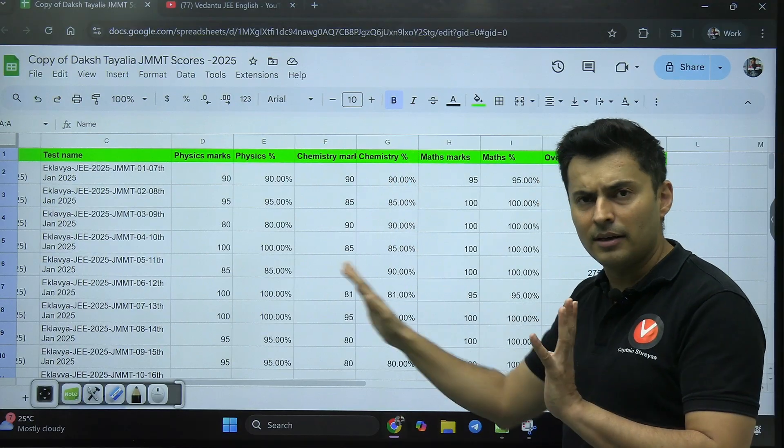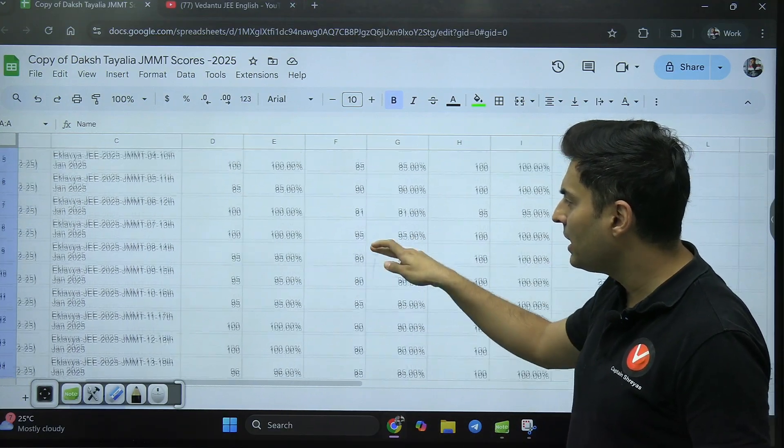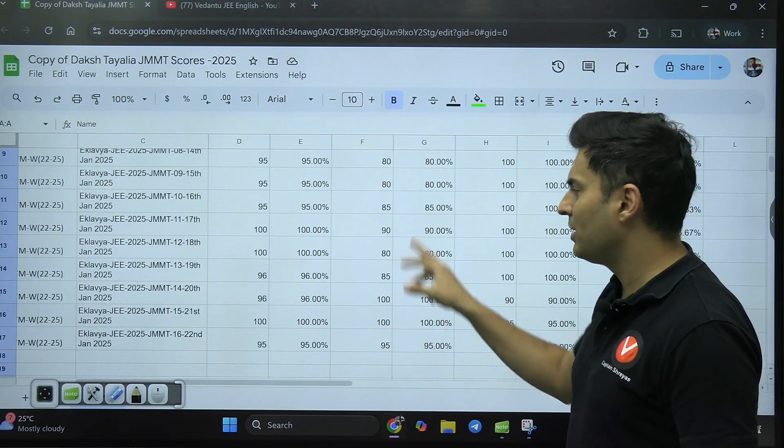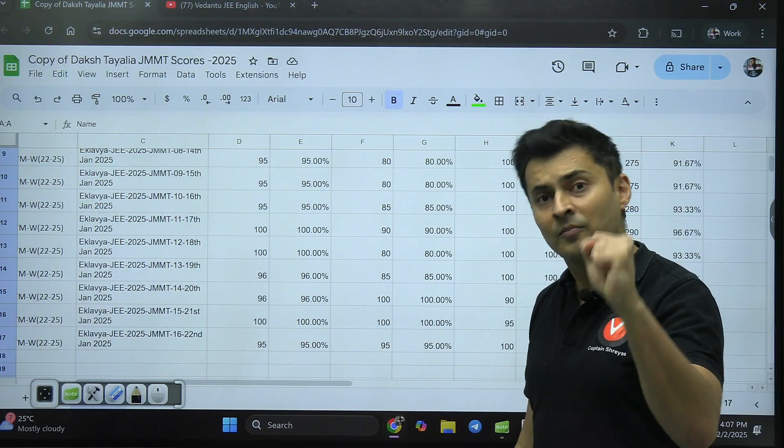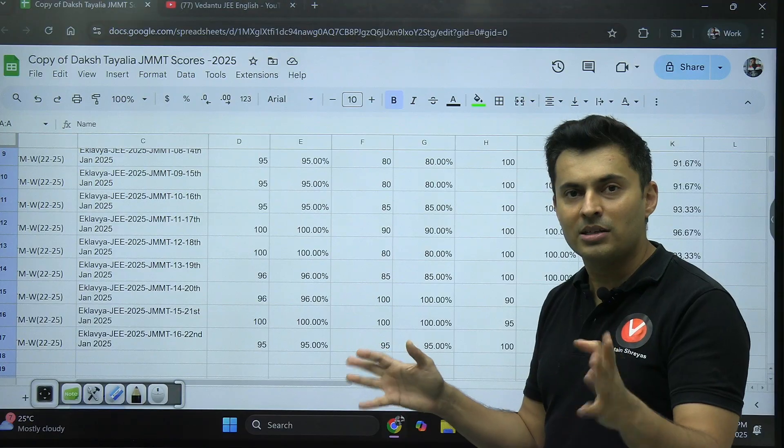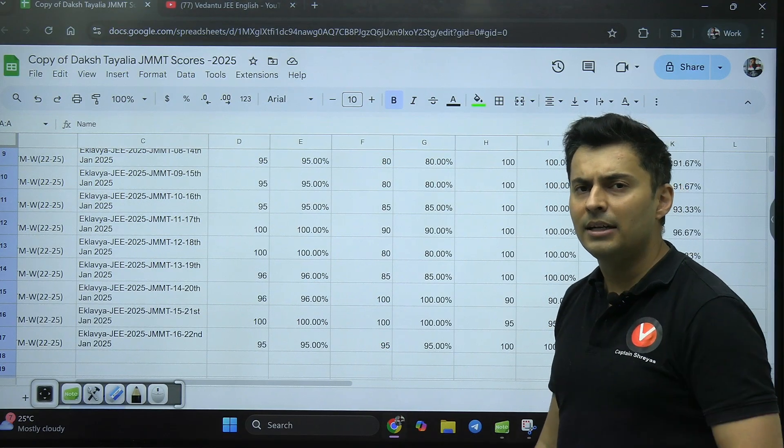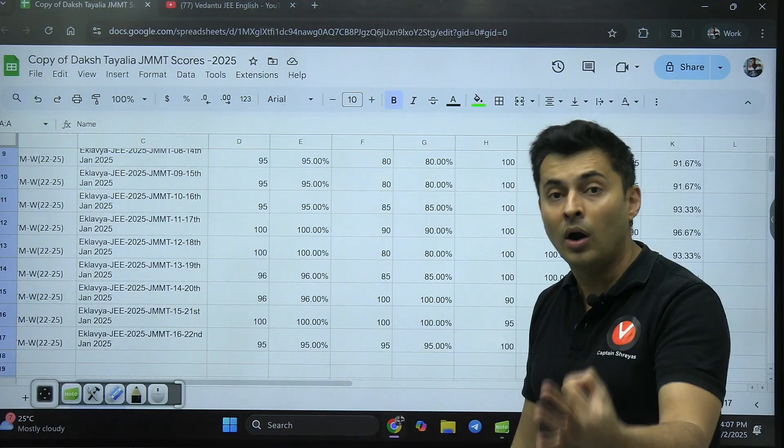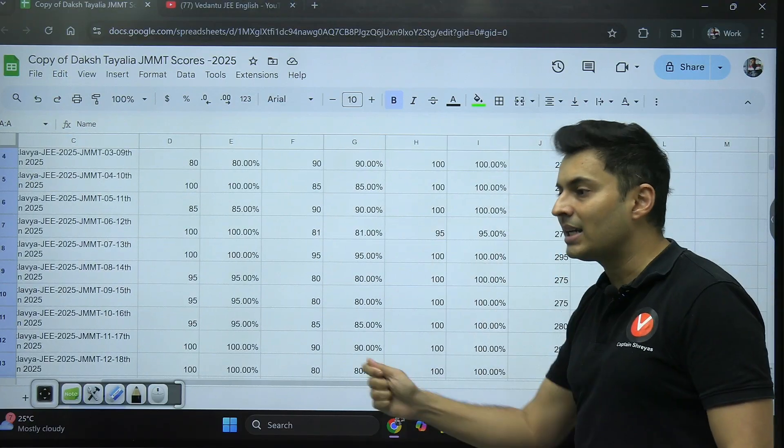If you see the scores in Chemistry, a similar thing—most of the times the Chemistry scores are a little bit lower compared to Maths and Physics: 90, 85, 90, 85, 90, 85, 90, 90, 80. Very few times 100.